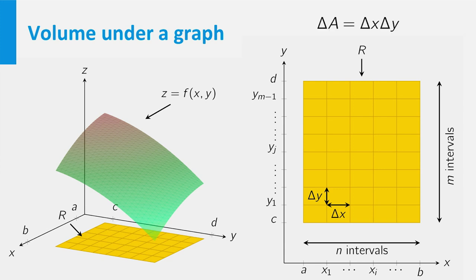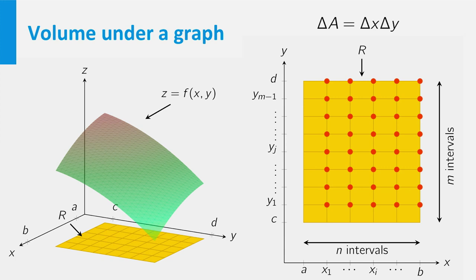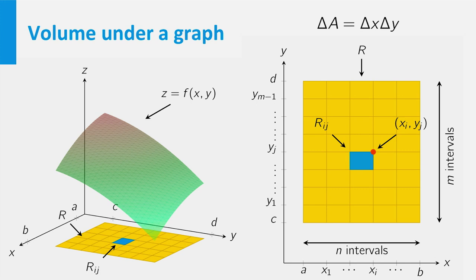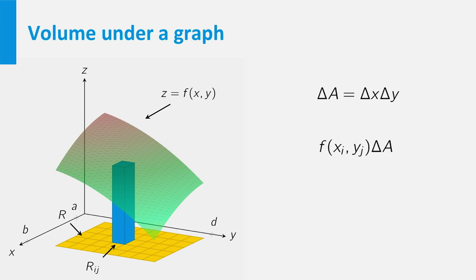Each smaller rectangle has area delta x times delta y, which we call delta A. The next step is to select a point in each of these rectangles, for example the point in the top right corner. Now consider R_ij, which is the ith rectangle in the x direction and the jth in the y direction. The point in R_ij is (xi, yj), and we can draw a box above R_ij with height f at (xi, yj).